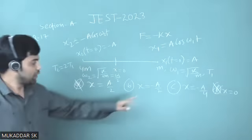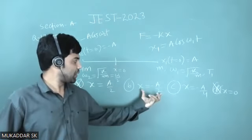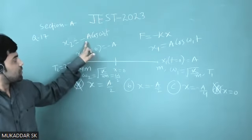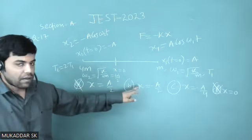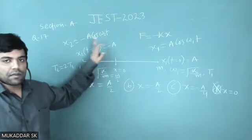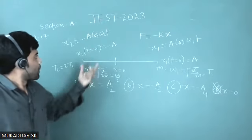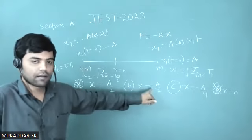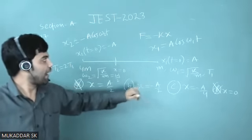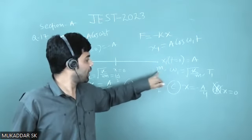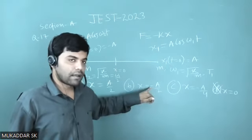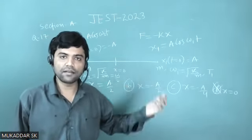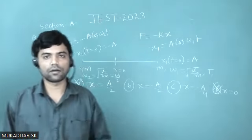Now I have to check whether x = -a/2 or x = 0 is correct. If both particles have the same position at the same time, they will collide. So I will check the time required for the 4m particle to reach x = -A/2 and compare it with the time required for mass m to reach x = -A/2. If both times match, collision occurs at that position.